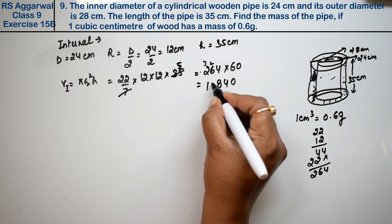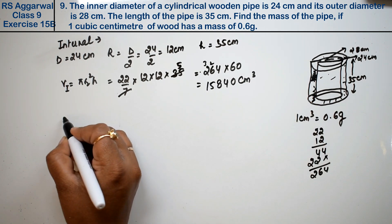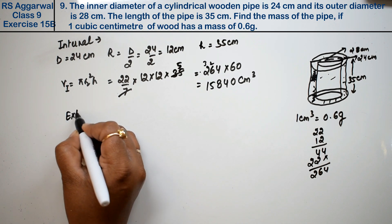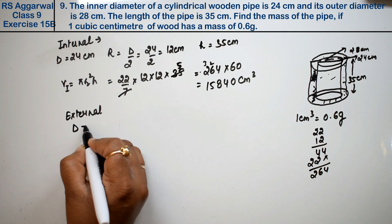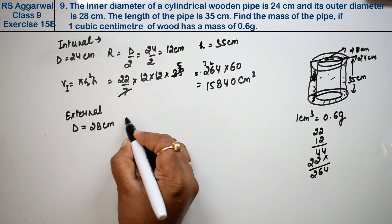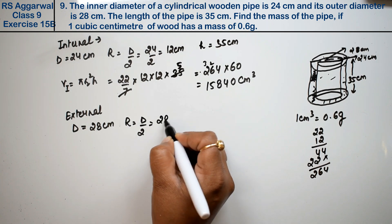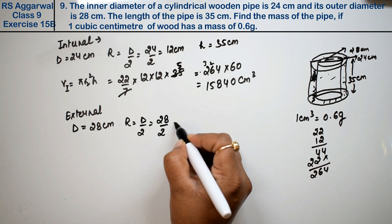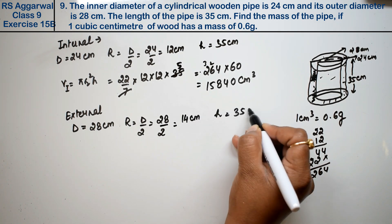So this equals 15,840 cm cube, right friends. Now for external, the diameter given is 28 cm, so the radius is diameter upon 2, that is 28 upon 2, which equals 14 cm. And height is the same, 35 cm.